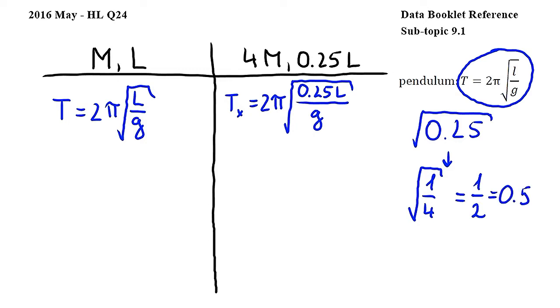Taking 0.25 out from under the square root and converting it into 0.5 in the expression we get Tx is equal to 2π times 0.5 times square root of l over g.